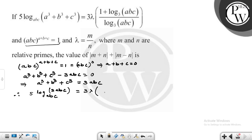This is 3λ times (1 + log₃(abc)) divided by log₃(abc).